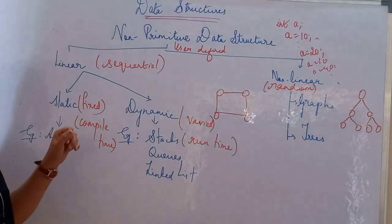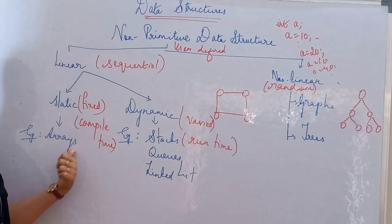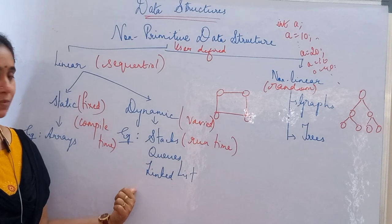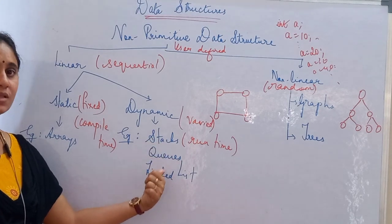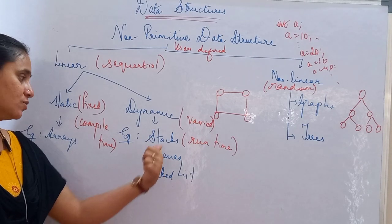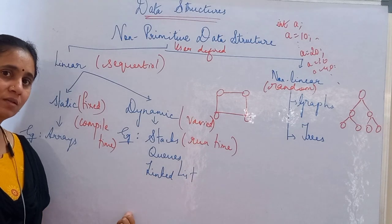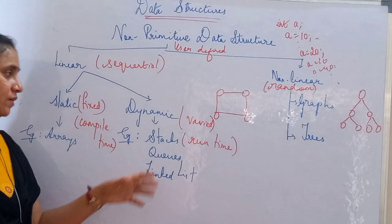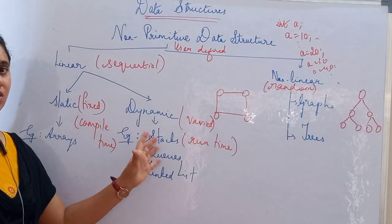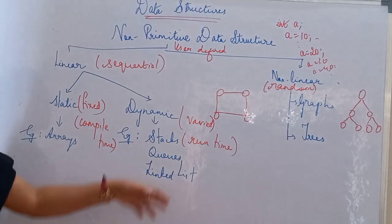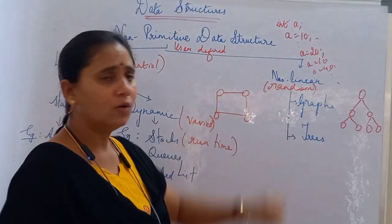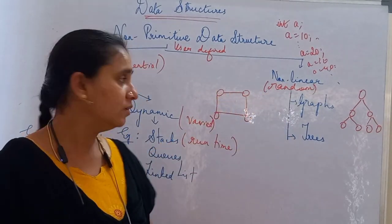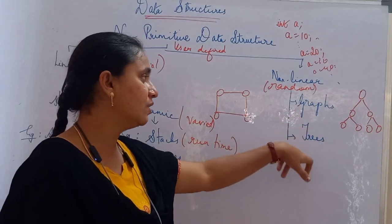Under static, we have the example of arrays. Under dynamic, we have three types: stacks, queues, and linked lists. These are all very vast topics, and under this video session we will just have an introduction. Under non-linear, we have two types: graphs and trees.